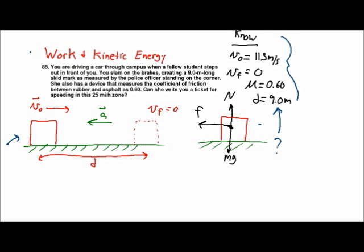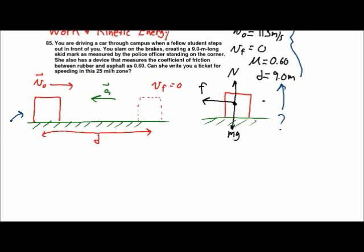Alright, so we want to use the work kinetic energy theorem to solve this and we see that there are three forces acting on the car. There's the normal force and the weight and the frictional force, but two of the forces are perpendicular to the motion—the normal force and the weight—and so they do no work.